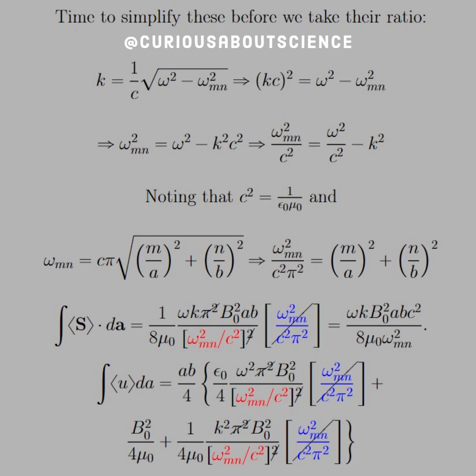then we see that kc squared is equal to omega squared minus omega mn squared. Solve this for omega mn. And chug it on through, divide by c. Yeah, do all that stuff. And noting that c squared is equal to 1 over epsilon naught mu naught,